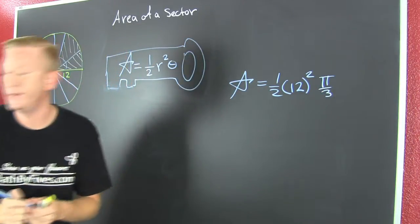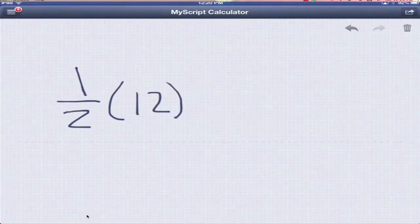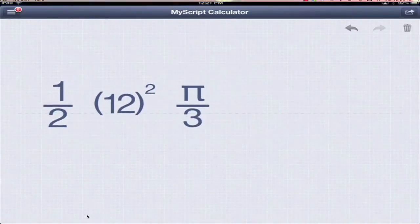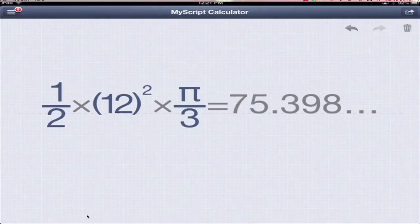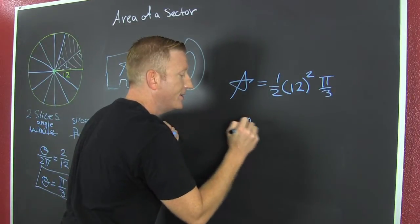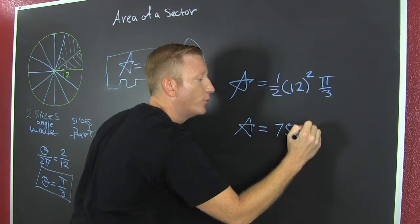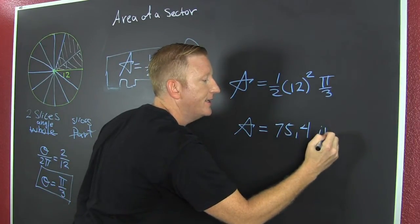So then we're going to put it into our machine. So I'm going to take 1 half and multiply it by 12 squared times pi over 3. And that's how we get 75.39. And then that's how we get that we have eaten 75.4 square inches.